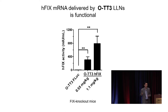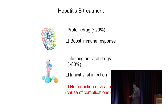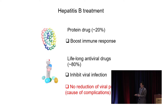Next, we asked if we could utilize this system for hepatitis B, a worldwide pandemic affecting over 350 million patients. About 80% of patients must take antiviral drugs lifelong. However, these drugs can only inhibit new viral infection — they cannot stop the virus from producing viral proteins, which cause serious complications such as liver cancer, liver sclerosis, and other complications.